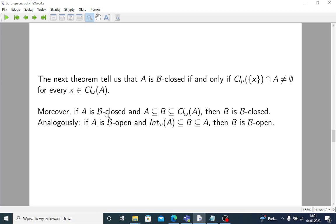Moreover, we may prove that if A is B-closed and A is contained in some B, but this B is contained in omega closure of A, then B is B-closed, too. So, a kind of restricted closure under supersets, in some sense, but restricted.